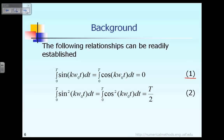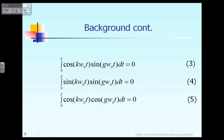That we have to prove later on. Equation 2 states that the integral from 0 to capital T, which is the period, of the function sin²(kω₀t), or the integral of cos²(kω₀t), is equal to capital T over 2. Equation 3 states that the integral between 0 and period T of cos(kω₀t) times sin(gω₀t) is equal to 0, where integers k and g are different in general.